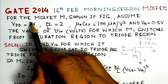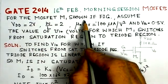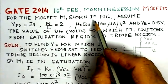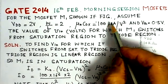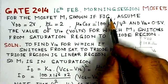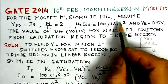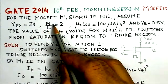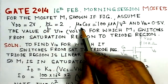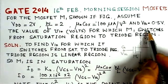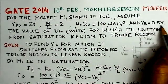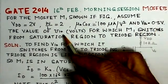We will read out the problem here for the MOSFET M1 shown. If shown in figure, assume VDD is 2 volts, W by L is 2, mu N cox is 100 microamperes per volt square and V threshold is 0.5 volts. The value of VIN for which M1 switches from saturation region to triode region.